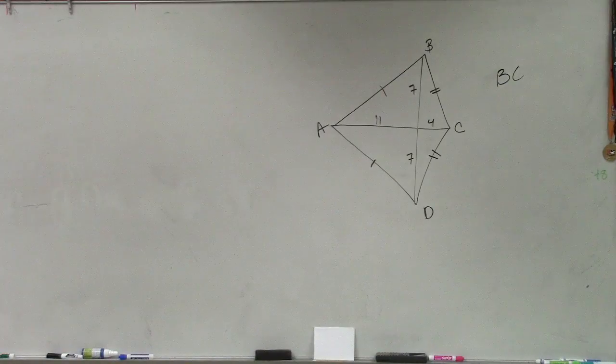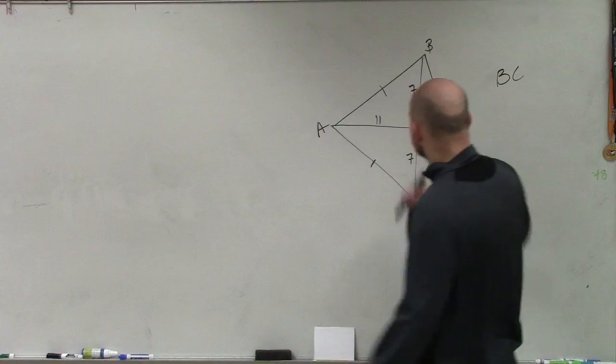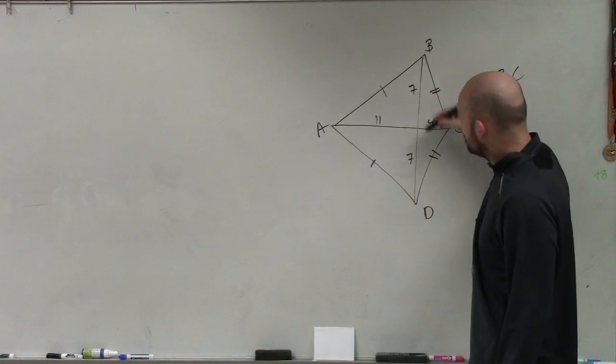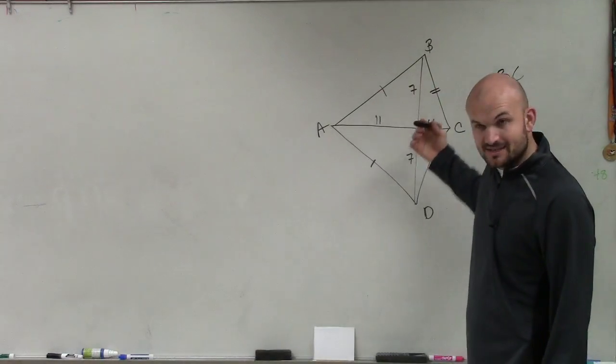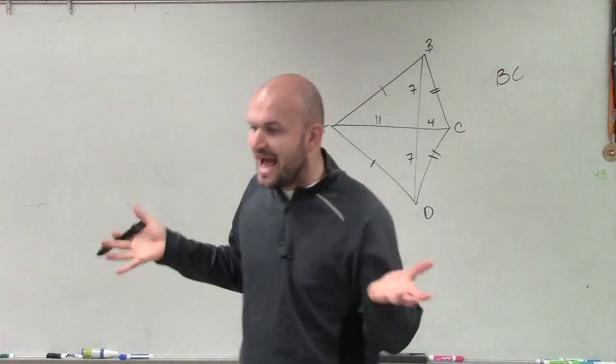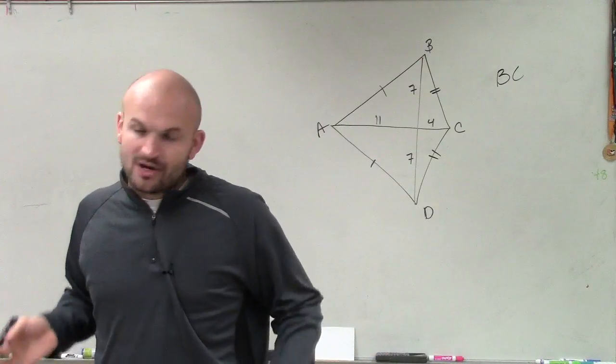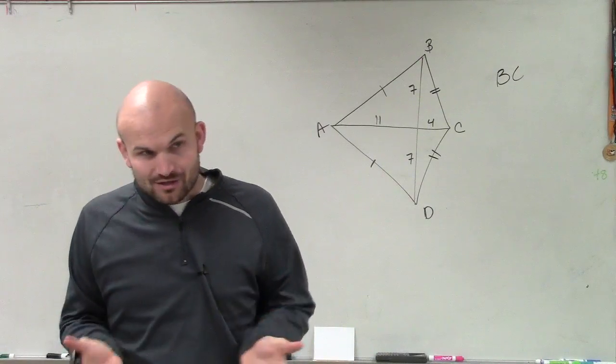Now, since we know that this is a kite because we have our opposite sides that are congruent, and we have our diagonals being bisected, we know that a kite's diagonals intersect each other at a very special angle.